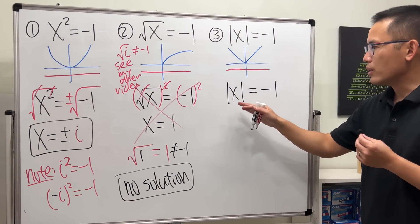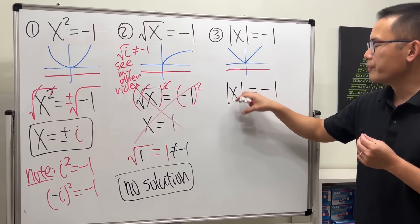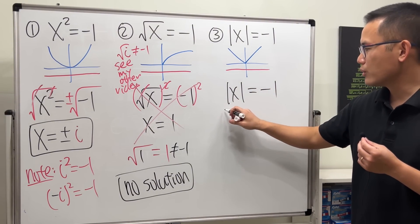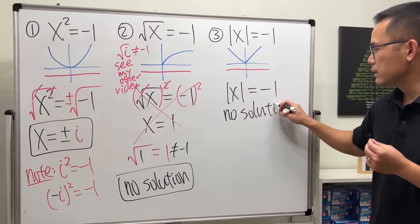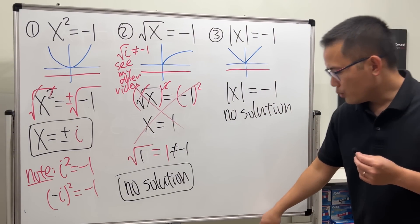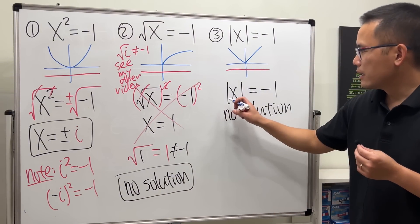If you are talking about the distance, you can never have negative distance. So whenever we have absolute value, if the output is equal to a negative number, this right here also has no solution. It's not possible.